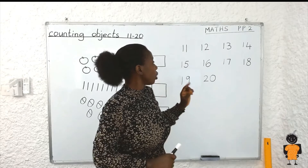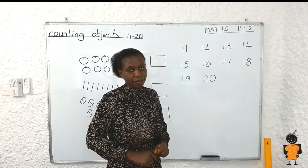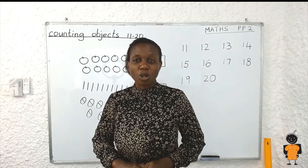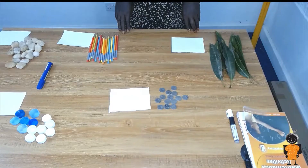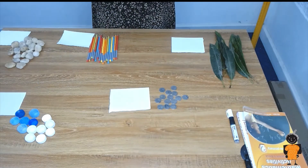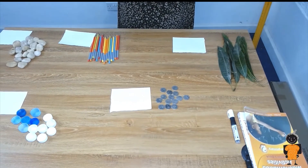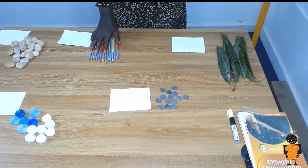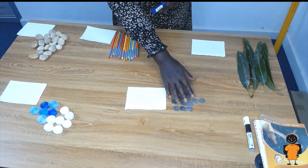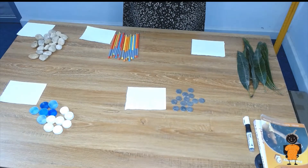So we are going to learn how to count objects, and we'll use numbers 11 to 20. Now I have some concrete objects with me that I want you to help me count. Are you ready? My dear learners, I have some objects with me here — can you see them? We have leaves, pencils, stones, some beads, bottle tops, and some coins. I want us to count the objects together. Are you ready?